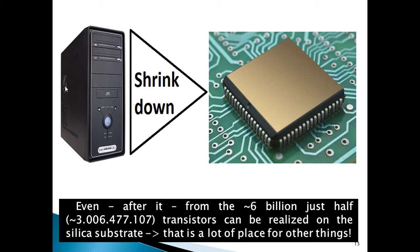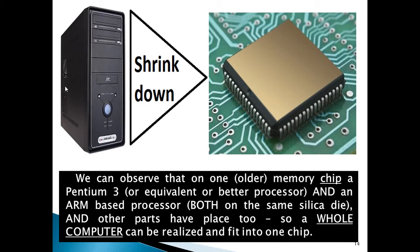Even from the 6 billion transistors, just half — about 3 billion transistors — can be realized on the silica substrate. That is a lot of place for other things. We can observe that on one older memory chip, a Pentium 3 or equivalent, or even a better processor, and an ARM-based processor, both on the same silica die, and other parts have place too. So a whole computer can be realized and fit into one chip.